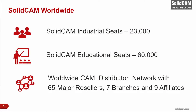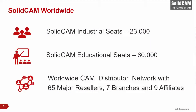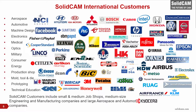We currently have 23,000 industrial seats worldwide, 60,000 educational seats, and our worldwide CAM distributor network includes 65 major resellers, seven branches and nine affiliates. All these branches, affiliates and resellers know the product excellently, demo it the best, and give the best technical and post-processor support. Our international customers include large aerospace and automotive companies, medium-sized engineering and manufacturing companies, and small and medium job shops across all industries: aerospace, automotive, machine design, electronics, medical, optics, military, consumer, energy, production shop, mold, tool and die, prototyping, and technical education.